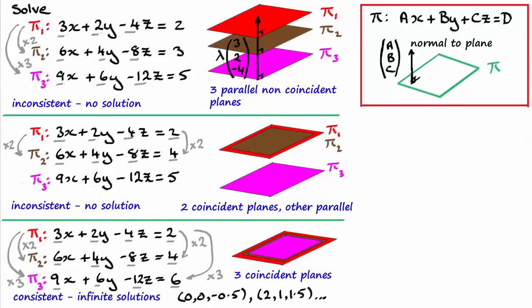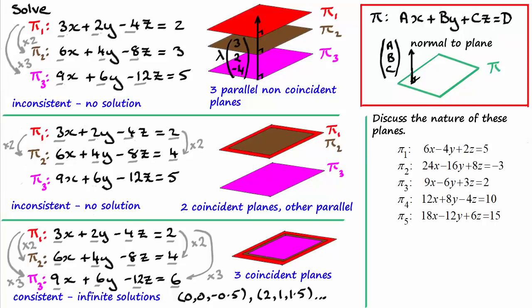Now, I've got a short exercise here. I've got five planes. And what I want you to do is just discuss the nature of these planes. Tell me which one of these planes are parallel and coincident. So I'll just give you a few moments to pause the video. And then when you come back, I'll quickly run through the answers.